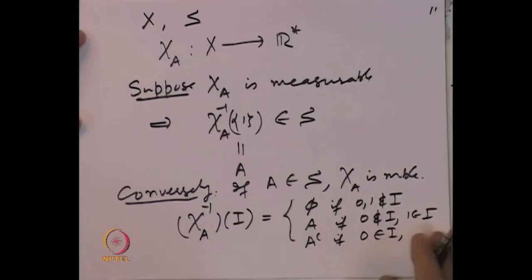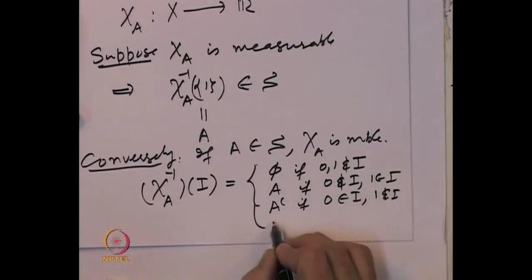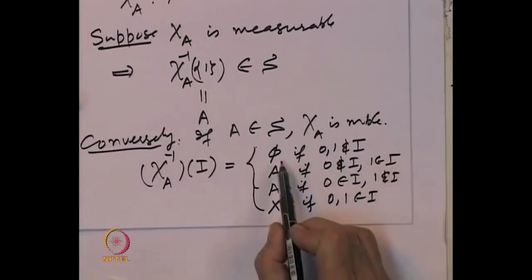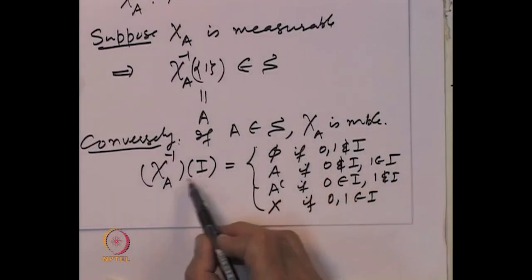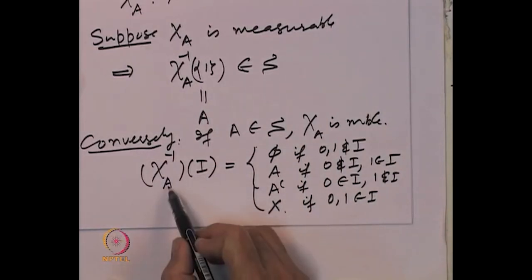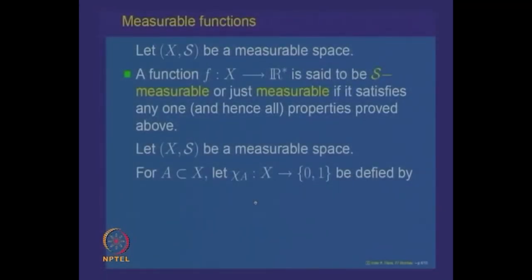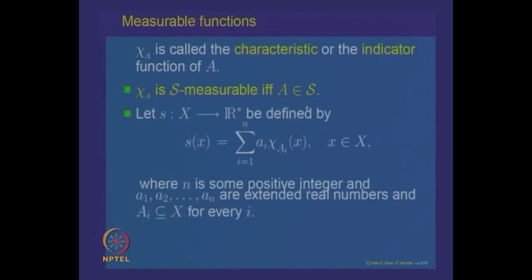As a first example, consider the indicator function of a set A. For any interval I, the inverse image of I under this indicator function is: empty if neither 0 nor 1 belongs to I; the set A if 1 belongs to I but not 0; A complement if 0 belongs to I but not 1; and X if both 0 and 1 belong to I. In each case the inverse image is in S. Hence the indicator function is measurable if and only if the set A belongs to S.